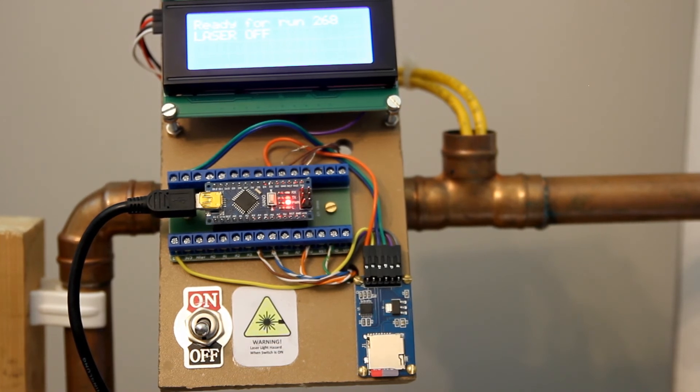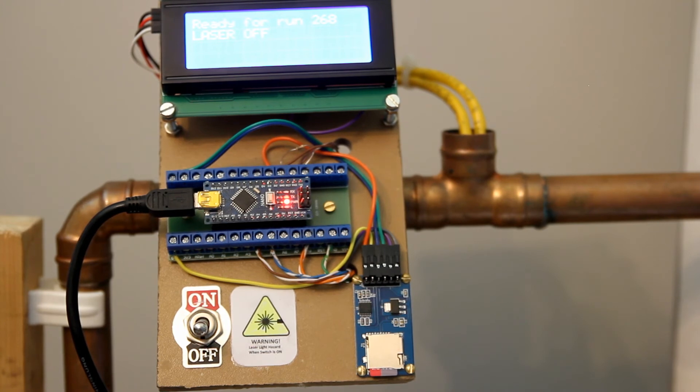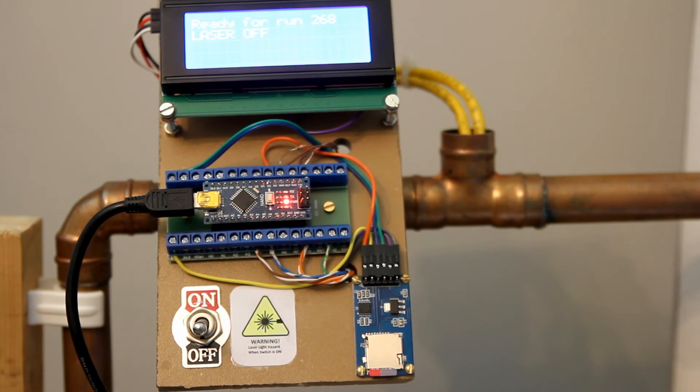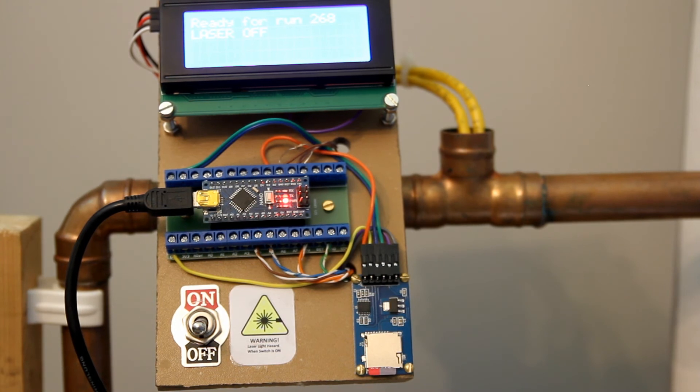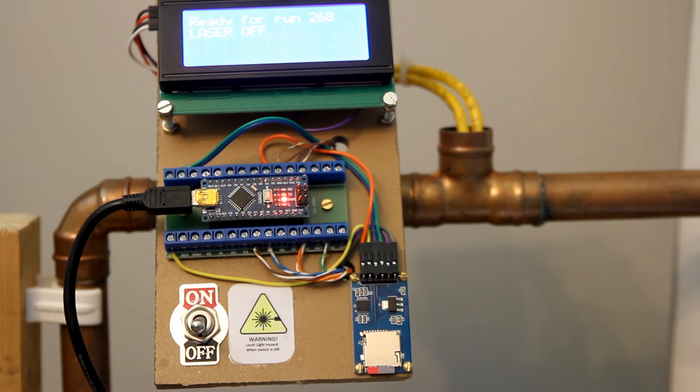So there it is, the new shutter timer with the version 2 software. None of the components I've used are very expensive. I mean the little data logger for the SD cards, a couple of quid. Even the display I think is about six or seven pounds.